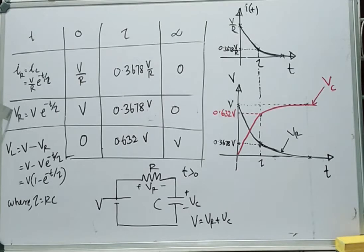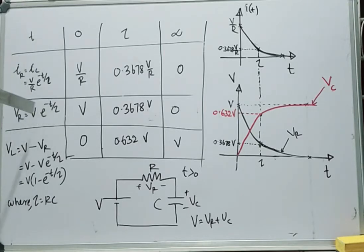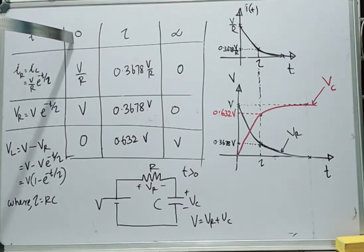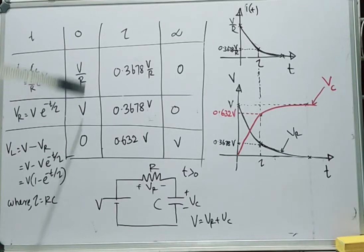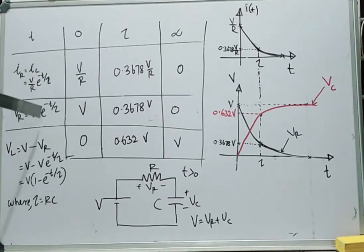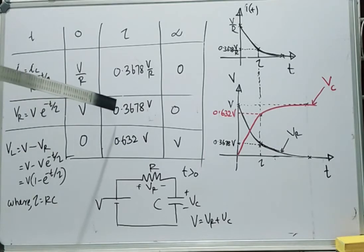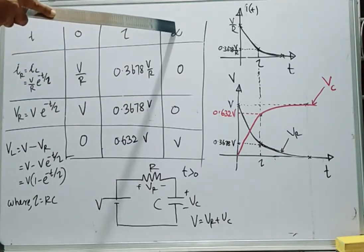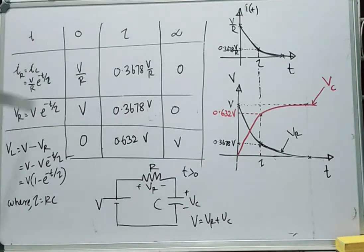Now let's see the variation of voltage across resistor VR, which equals I(R) times R. Canceling R, we get the expression V times e raised to minus T/tau. Substituting T equal to 0, we obtain V. Substituting tau, we obtain V times e raised to minus 1, that is 0.3678 V. And corresponding to T equal to infinity, VR is 0.